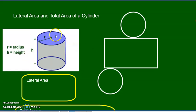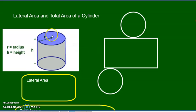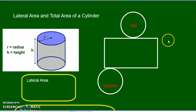Here we have a cylinder. A cylinder is made up of a circle on the top, a circle on the bottom, and then the side. If we take the cylinder in 3D and open it up into 2D, here's the circle that makes up the top, and then we have the bottom circle, and then we have this rectangle over here. This rectangle wraps around the top and the bottom to make the cylinder, so this part is just a rectangle.